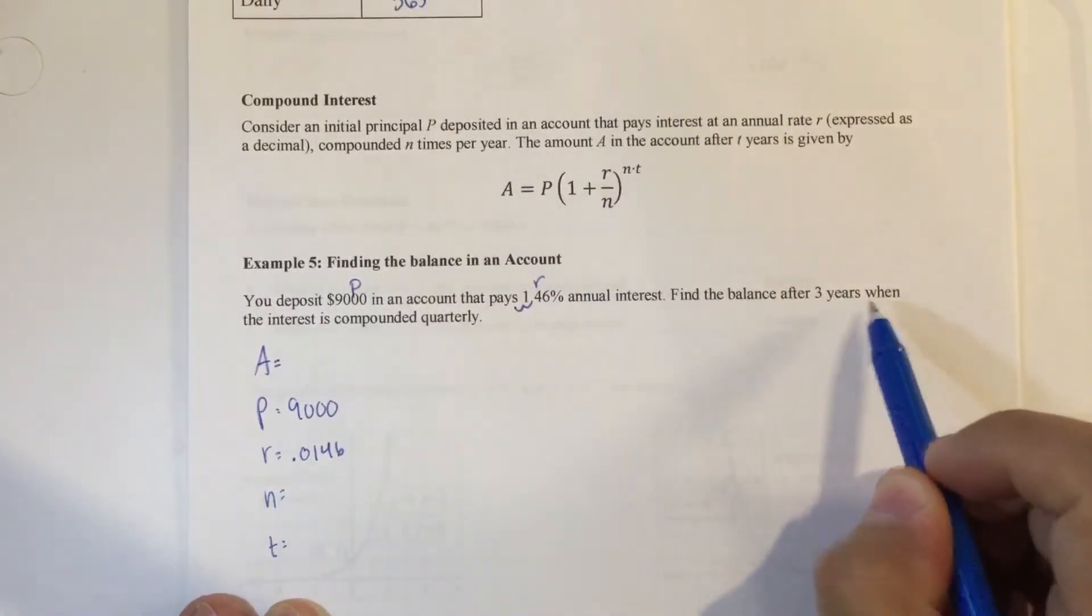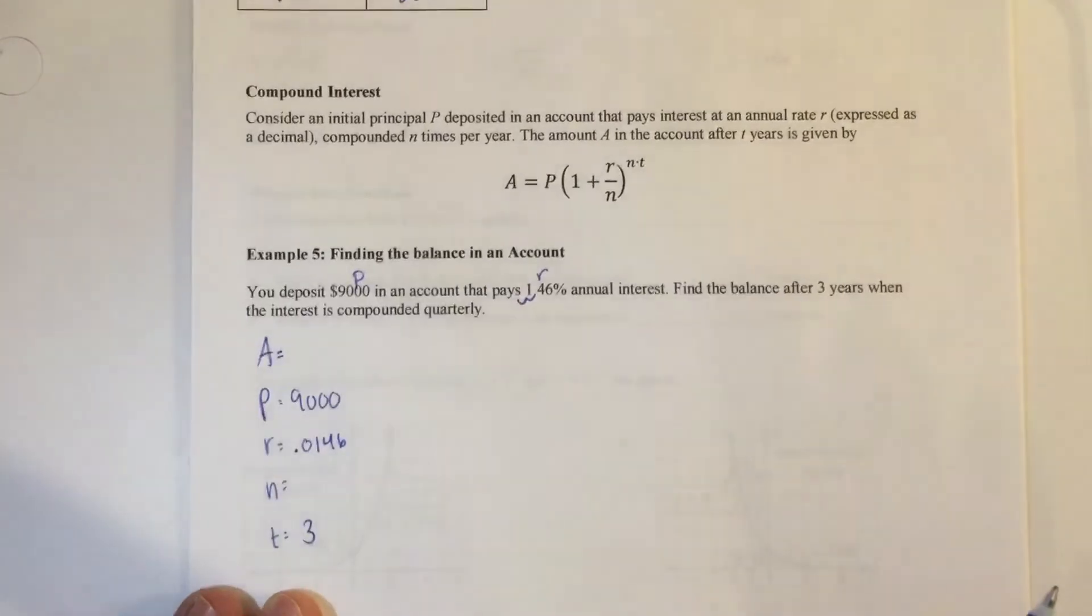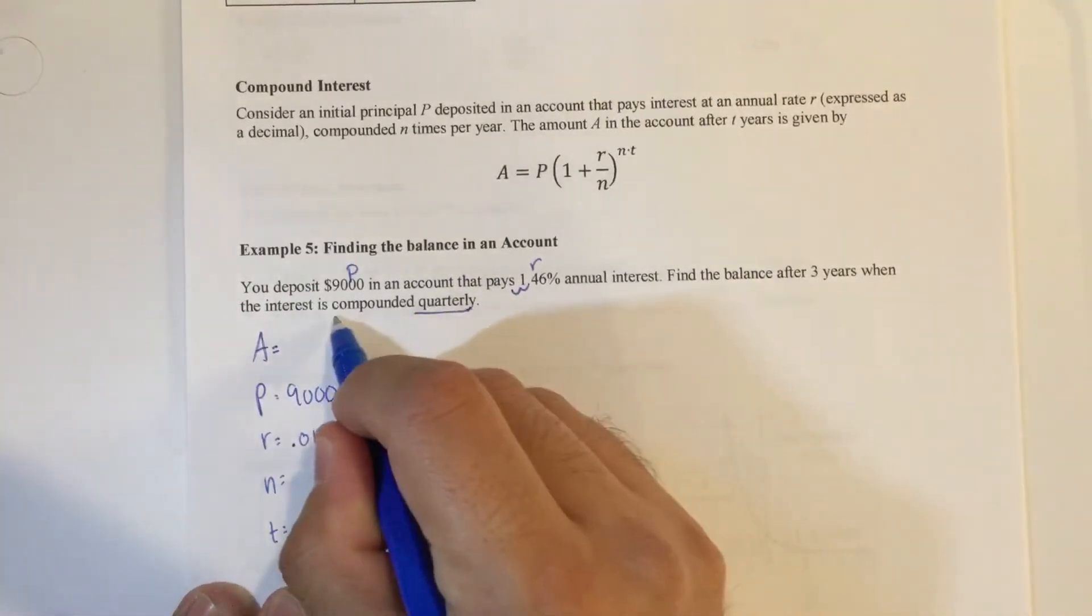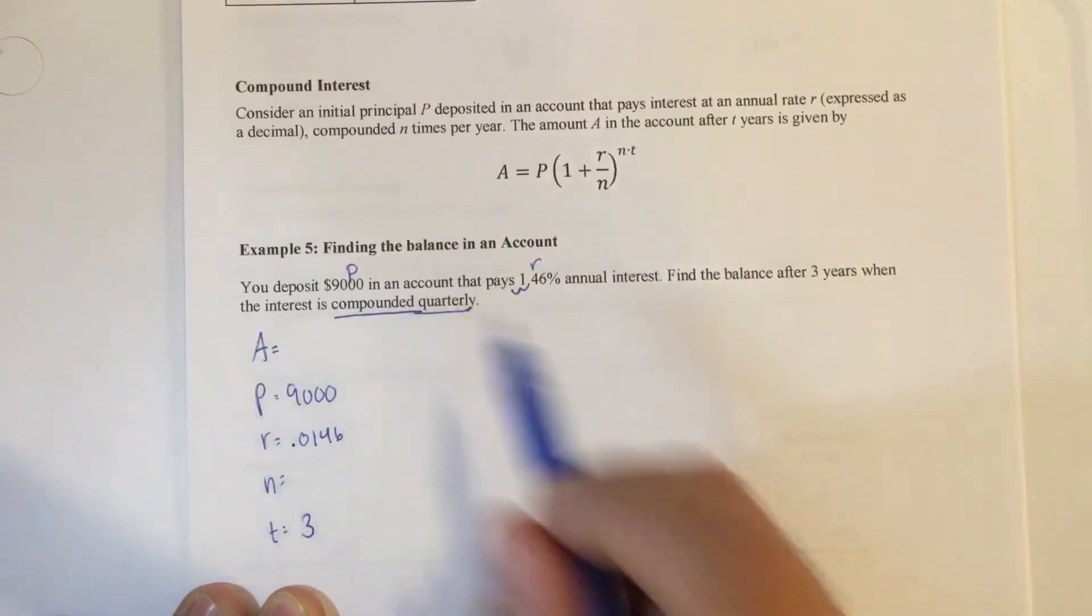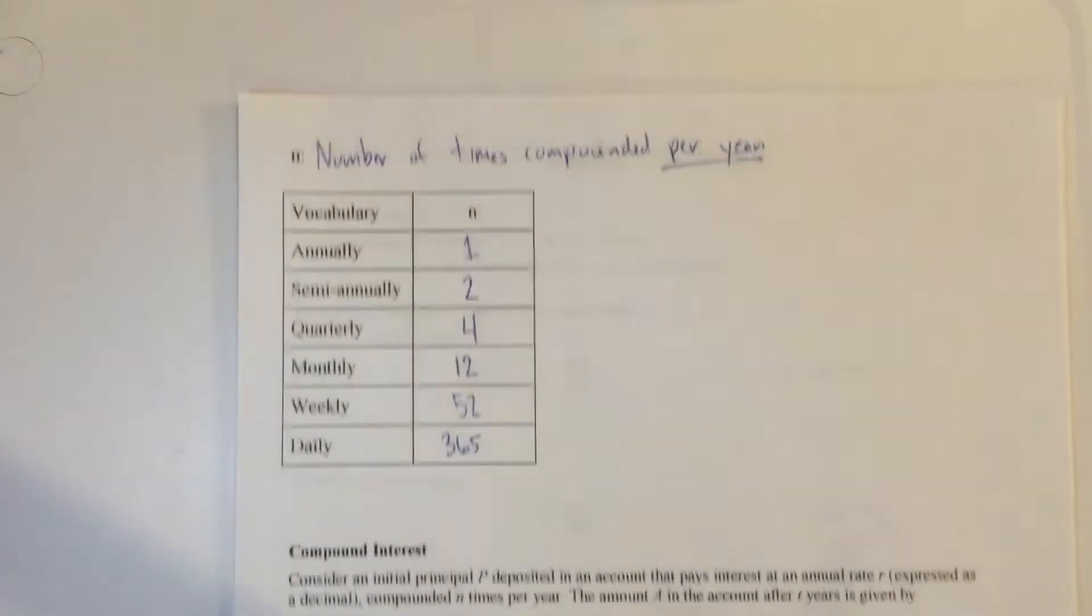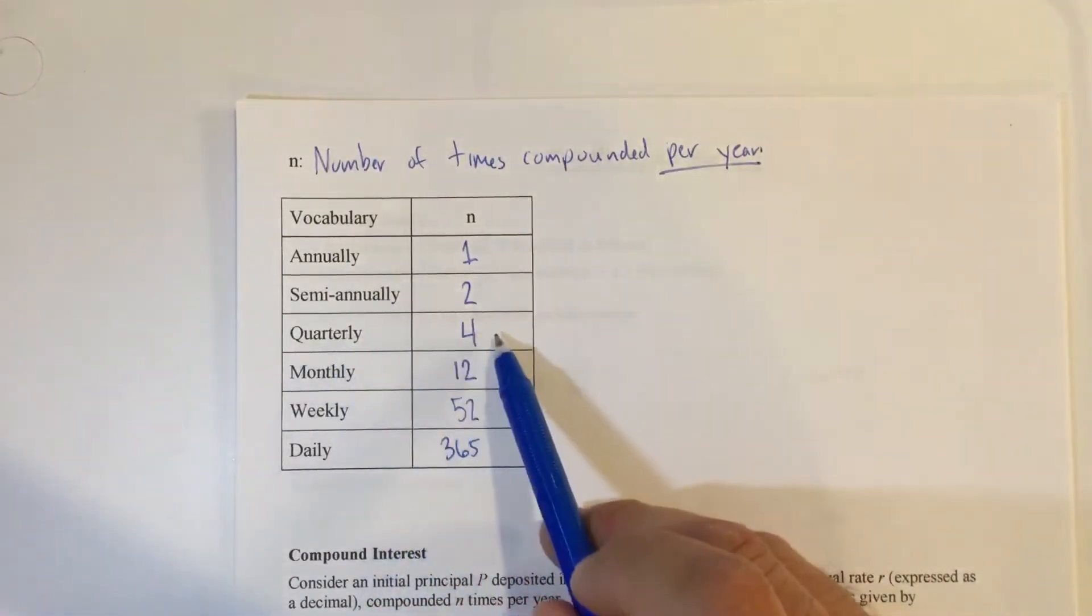Find the balance after three years, which is time. So the time is three when interest is compounded quarterly. Once I see compounded quarterly, that automatically tells me to go and look at that list or know what it is. Compounded quarterly is four.